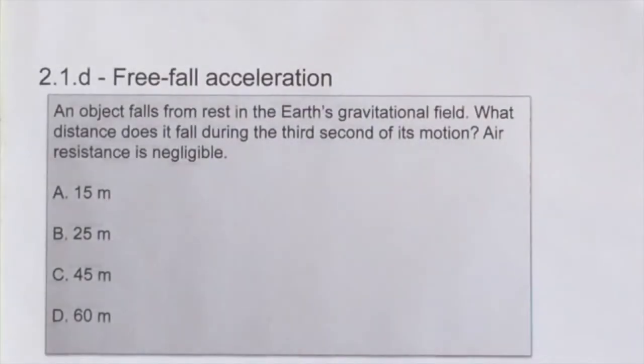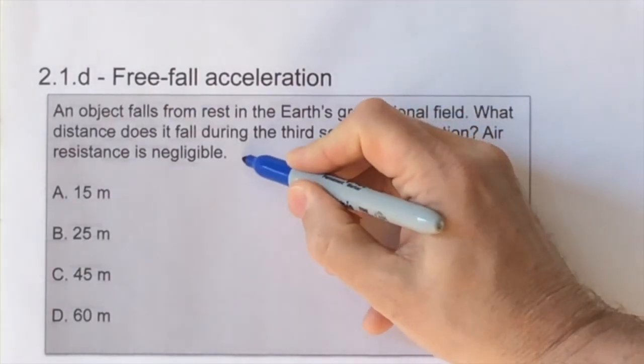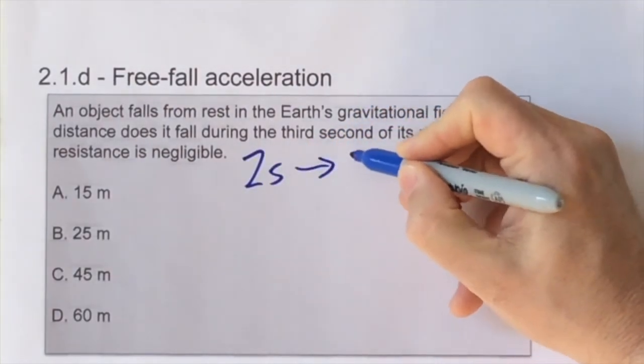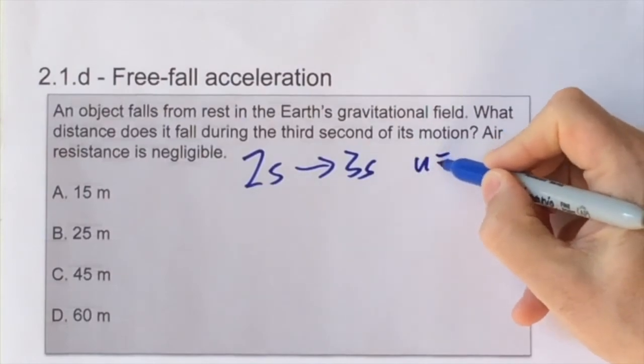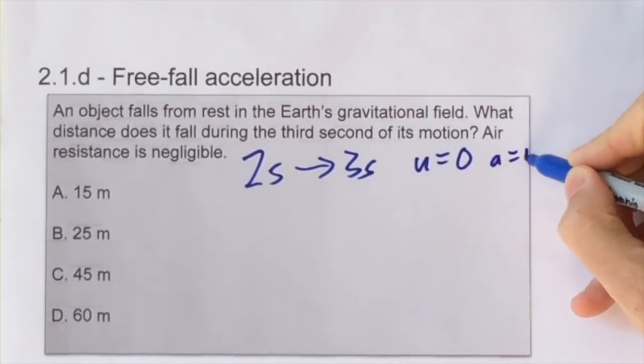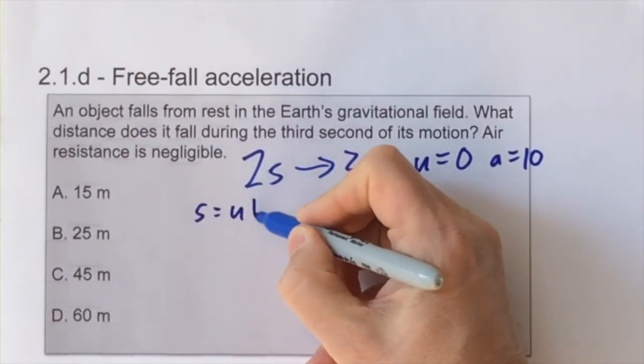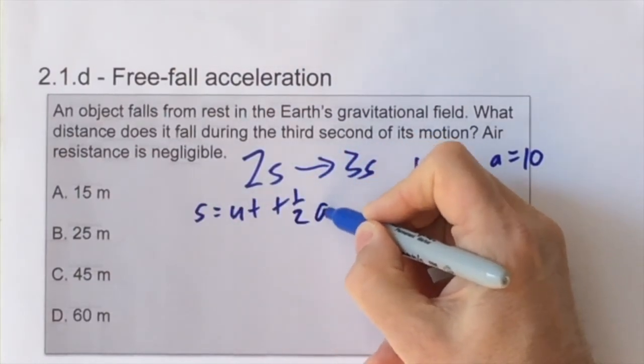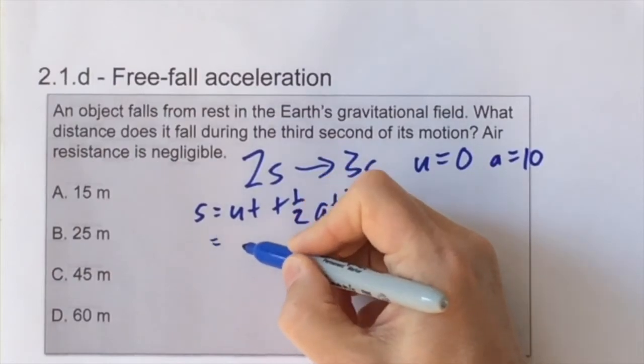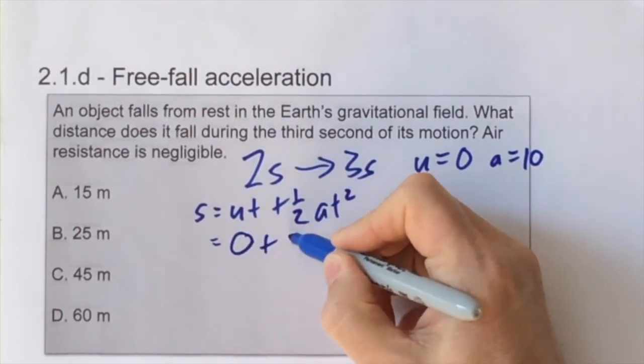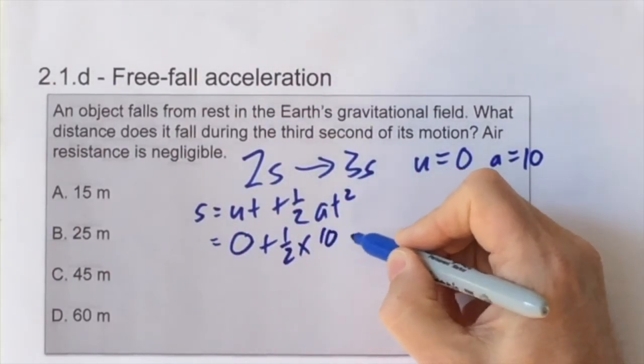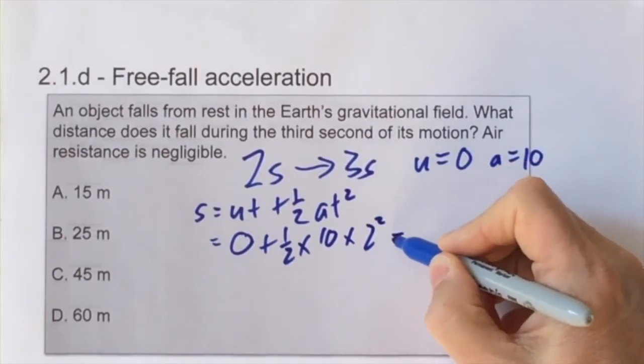This question is looking at the distance fallen during the third second of motion, and that's between t equals 2 and t equals 3. We know that the initial velocity u is 0 because it's falling from rest, and we take the down direction as positive and we say a equals plus 10. s equals ut plus half at² is the correct formula to use to find the distance travelled. We want to know the distance in the first two seconds first of all, and so we substitute in and we find that that is 20 meters.